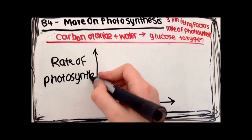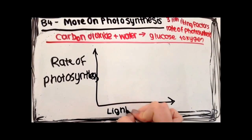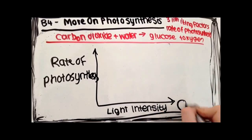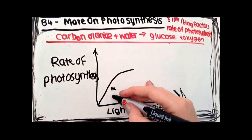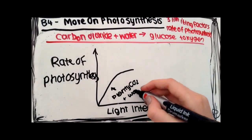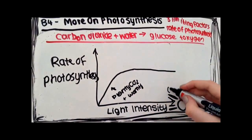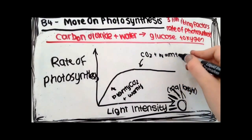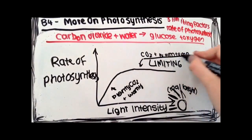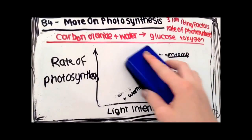So if the light level is raised, the rate of photosynthesis will increase, but only up to a certain point. This is because up to that point there has been plenty of CO2 and warmth. However, once it reaches a certain point, it won't make any difference how much light there is, because either the temperature or the CO2 level will now be the limiting factor.